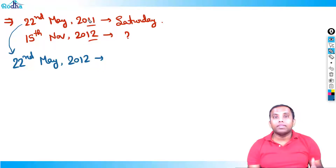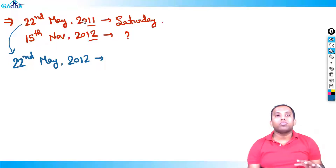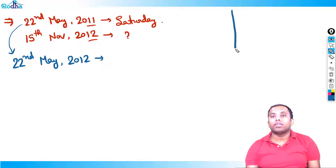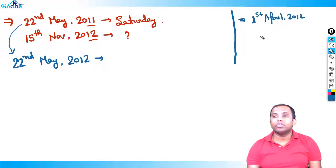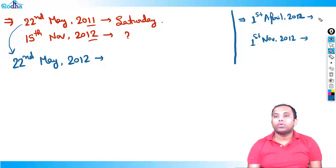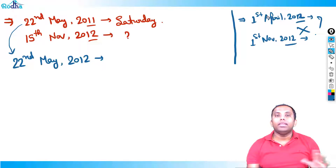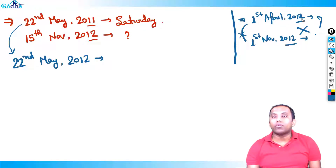The leap year concept only applies in the segment of February. If you're crossing February and it has 29 days, that's one day extra. If February has 28 days, you add only 365 days. If you're not crossing February at all — for example, from 1st April 2012 to 1st November 2012 — even if 2012 is a leap year, it doesn't matter because you're not crossing February.